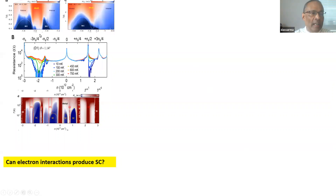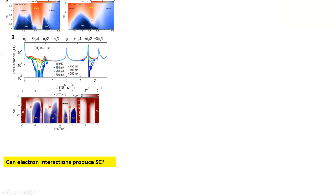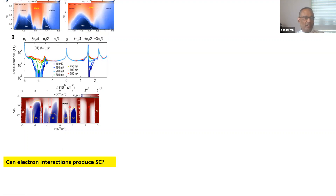These are the famous experimental results — the original results from Pablo's work, the famous people who started it all, showing superconducting domes. This is the Santa Barbara–Columbia collaboration that reproduced the basic physics, with a clear superconducting phase. These are beautiful data from Barcelona where you see superconductivity everywhere — it looks like it would be superconducting everywhere, except it's preempted by these insulating phases.